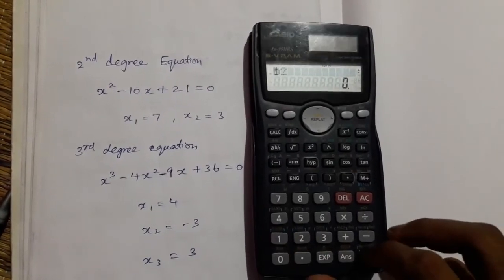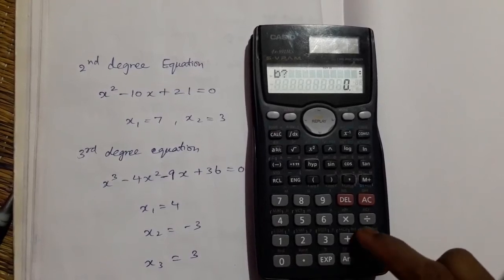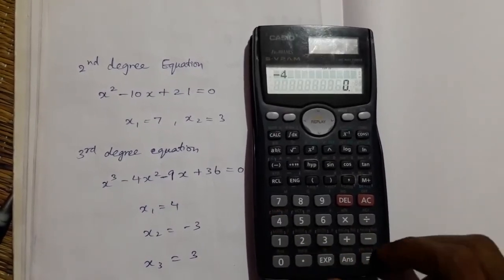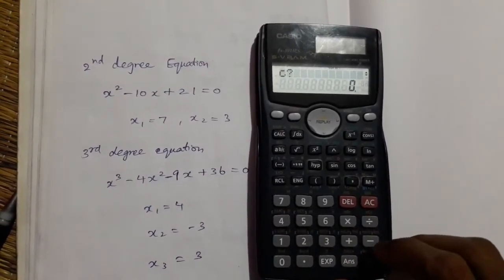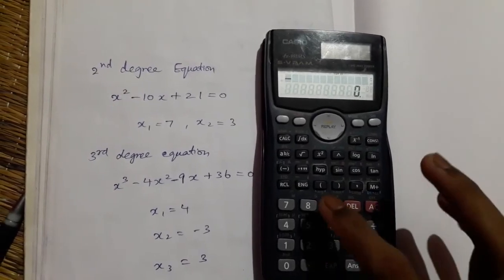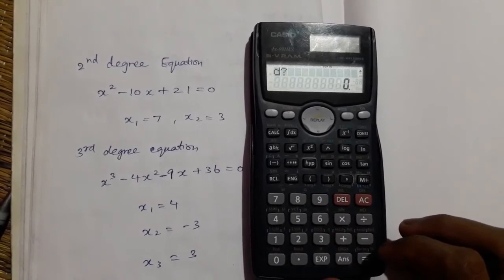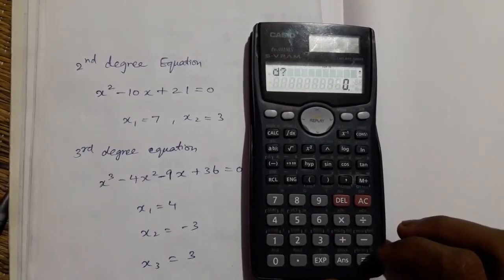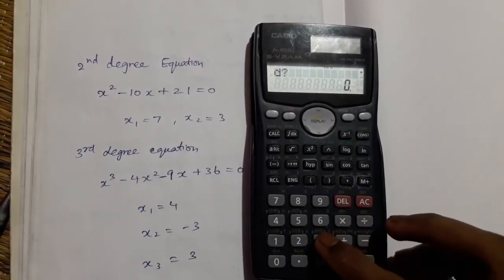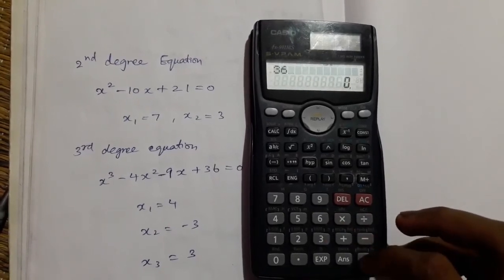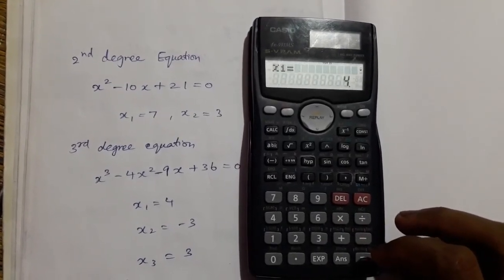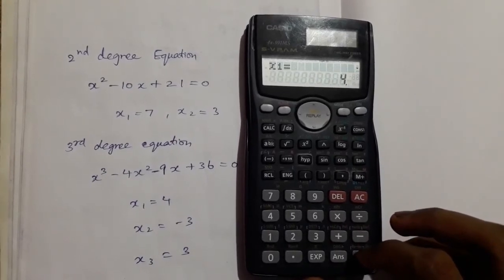For x square minus 4, equal to. For x coefficient is minus 9, equal to. And for a constant term is 36 and press equal to. We can get an answer: x1 is equal to 4.